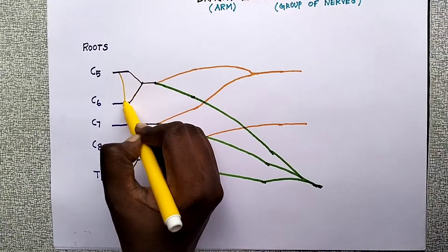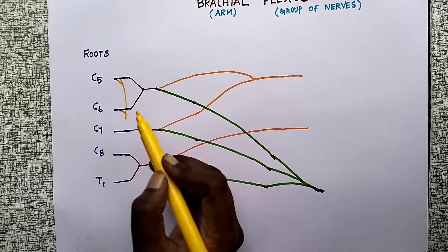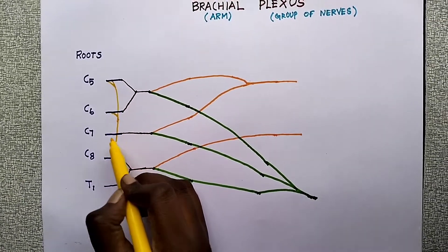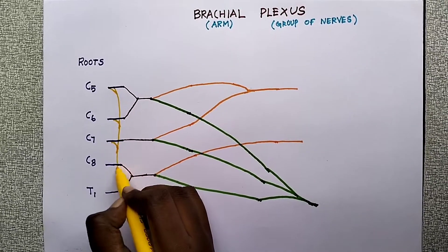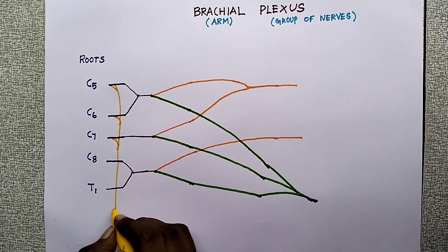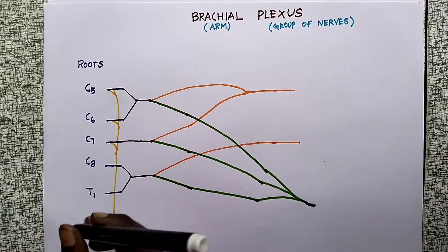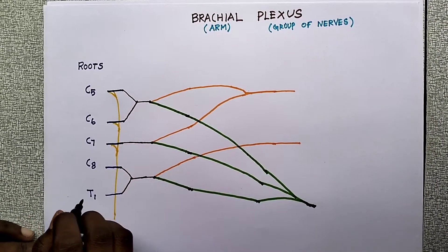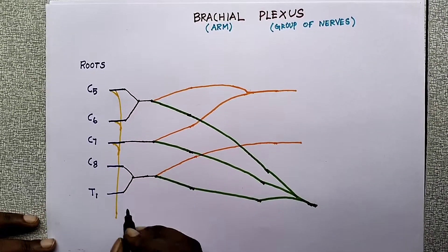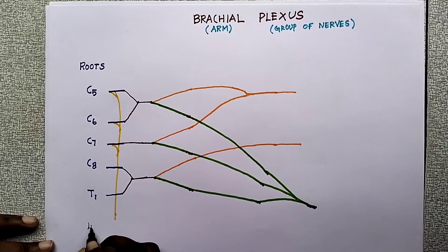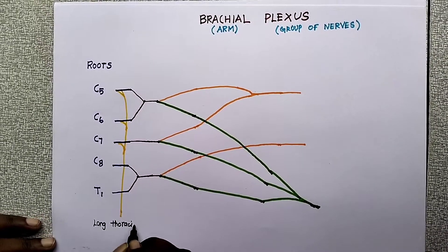The roots give off nerves directly. From C5, C6, C7 arises the long thoracic nerve, which supplies the serratus anterior. C5 also gives the dorsal scapular nerve.